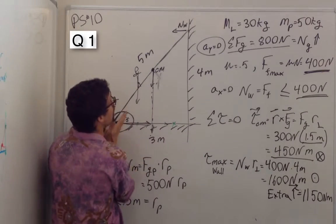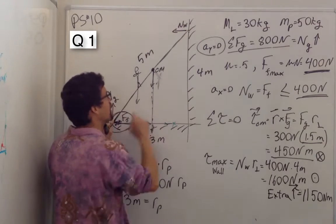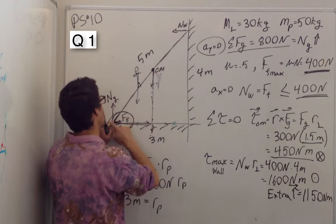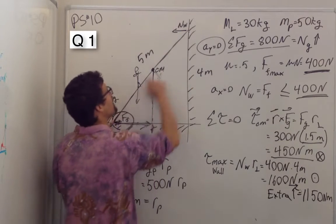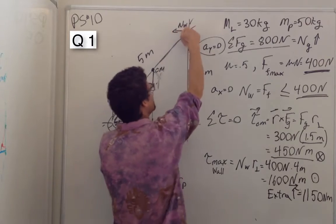Because its radius cross force or the perpendicular component of the radius. Because this force is horizontal, we're looking at the vertical component of this radius which would be this height which is the same as this height.